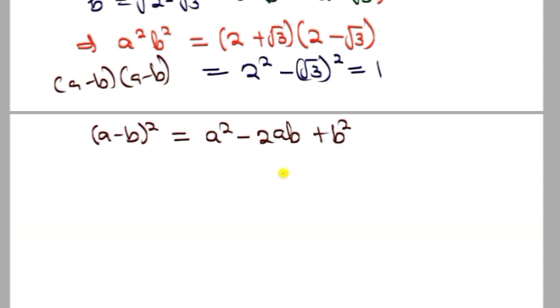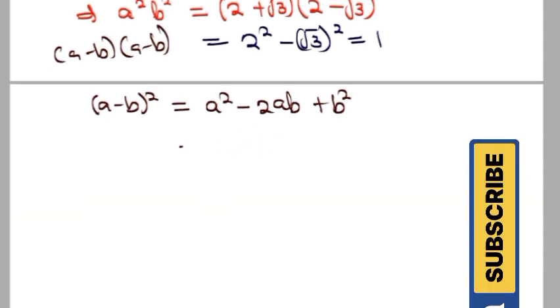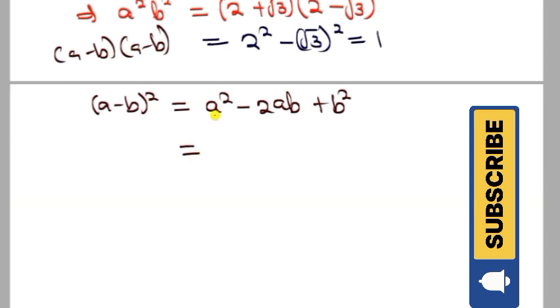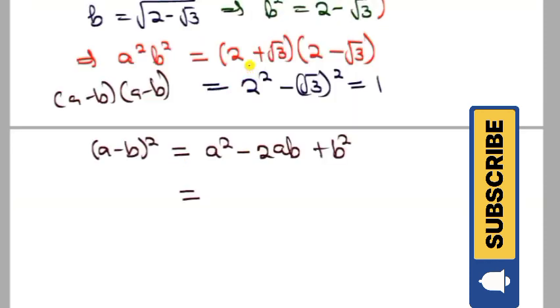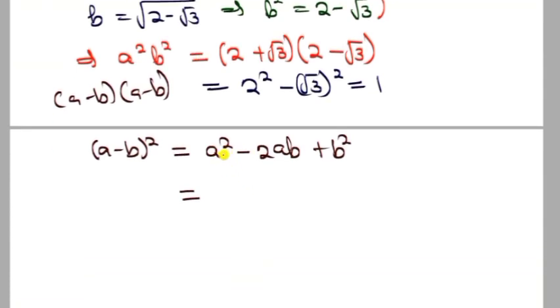We know a² = 2 + √3, so (a - b)² = (2 + √3) - 2ab + b².